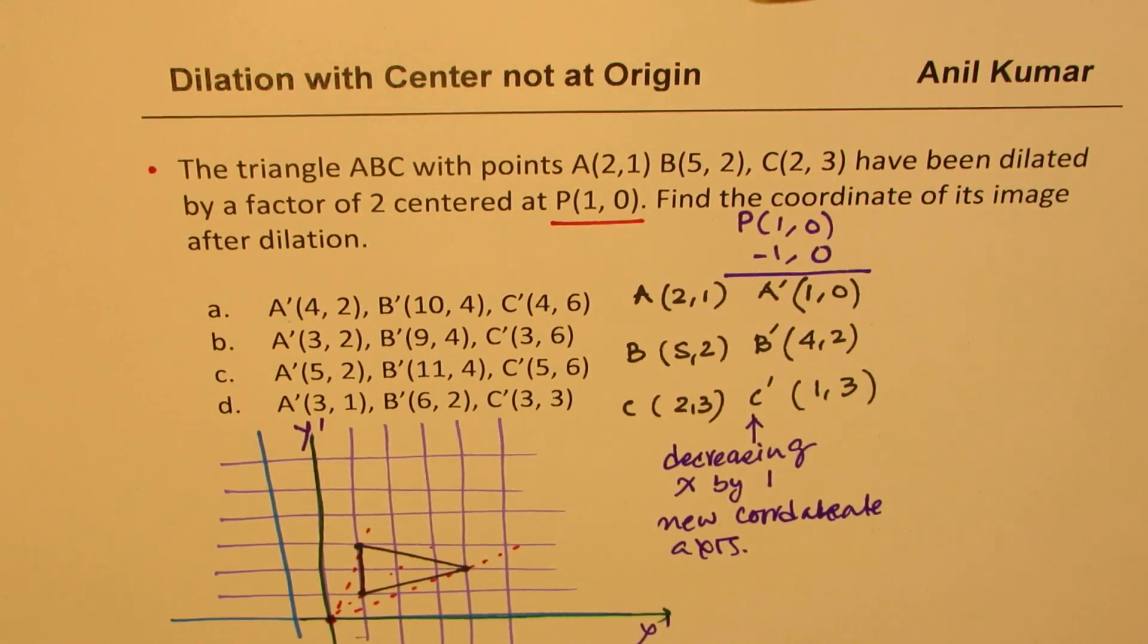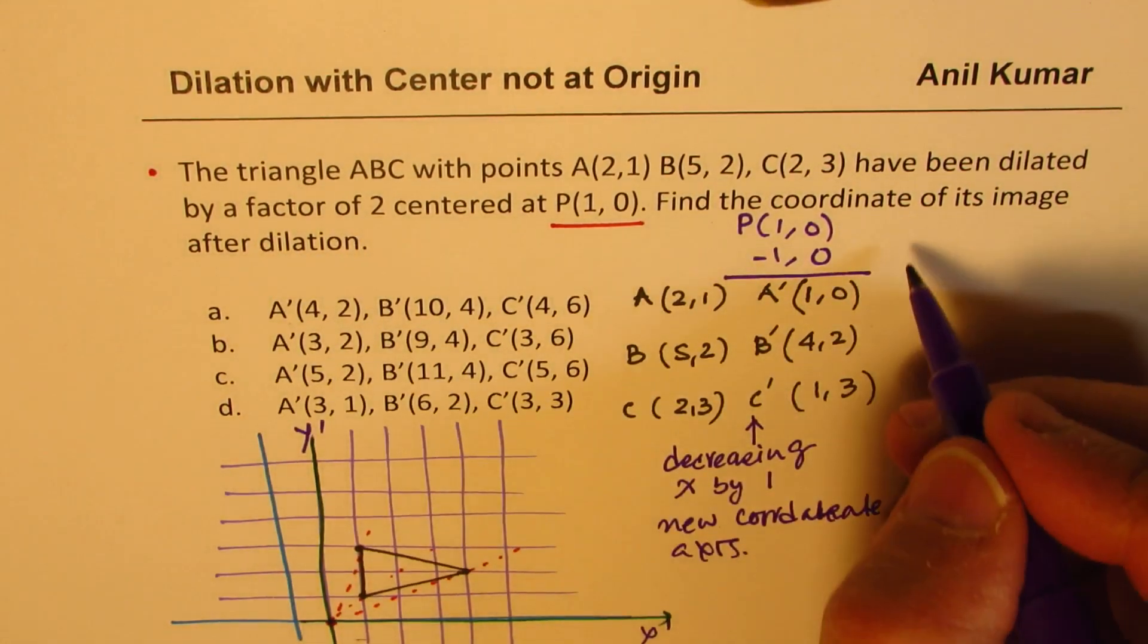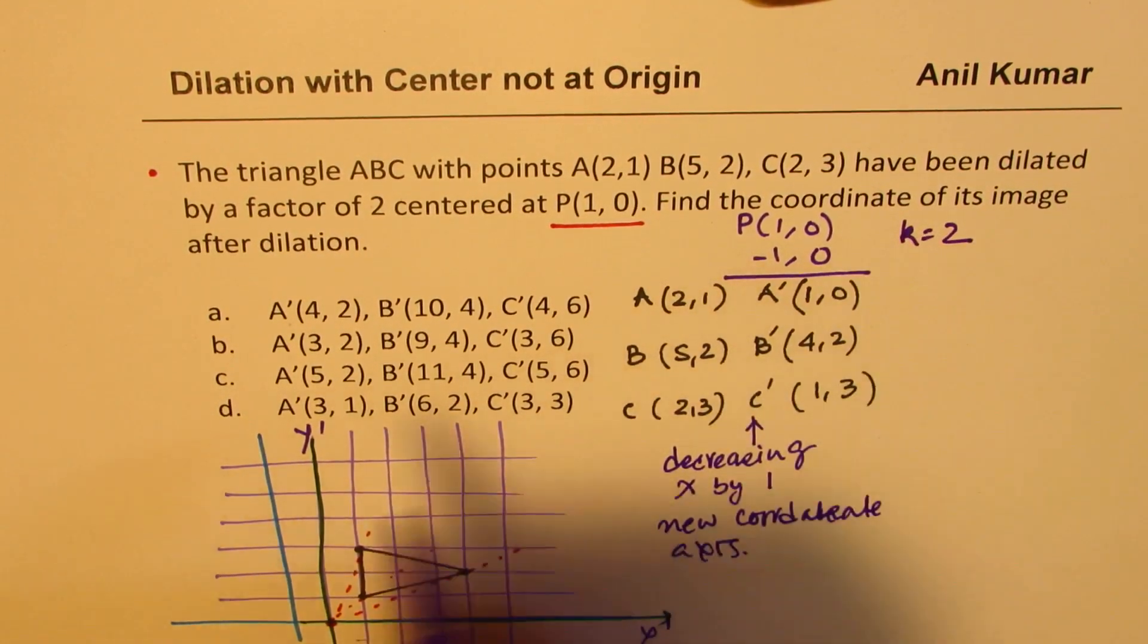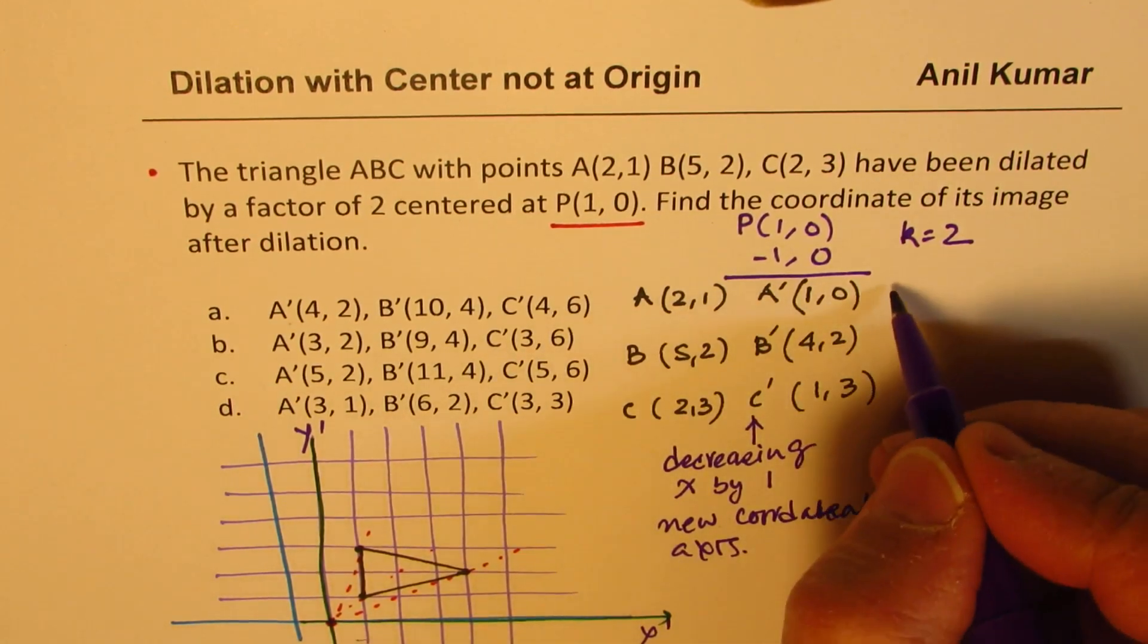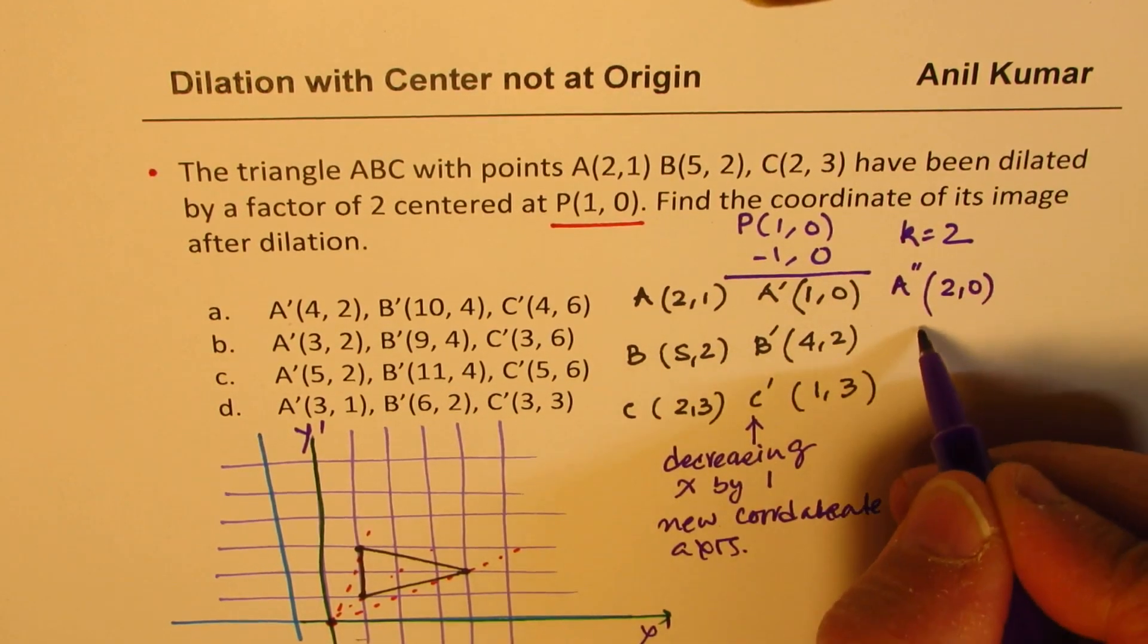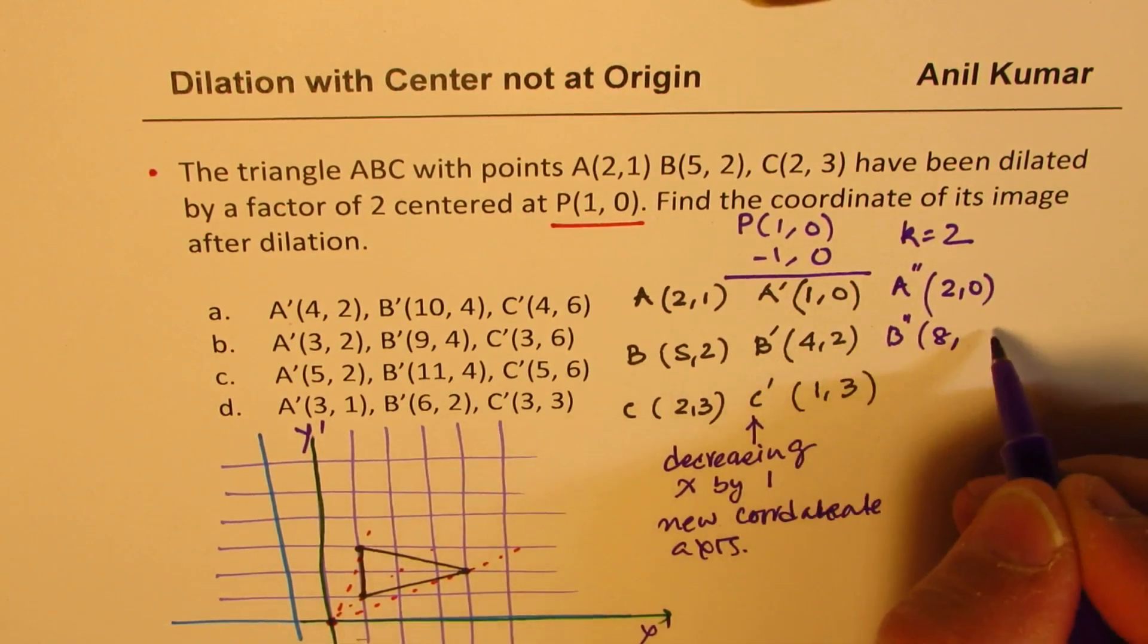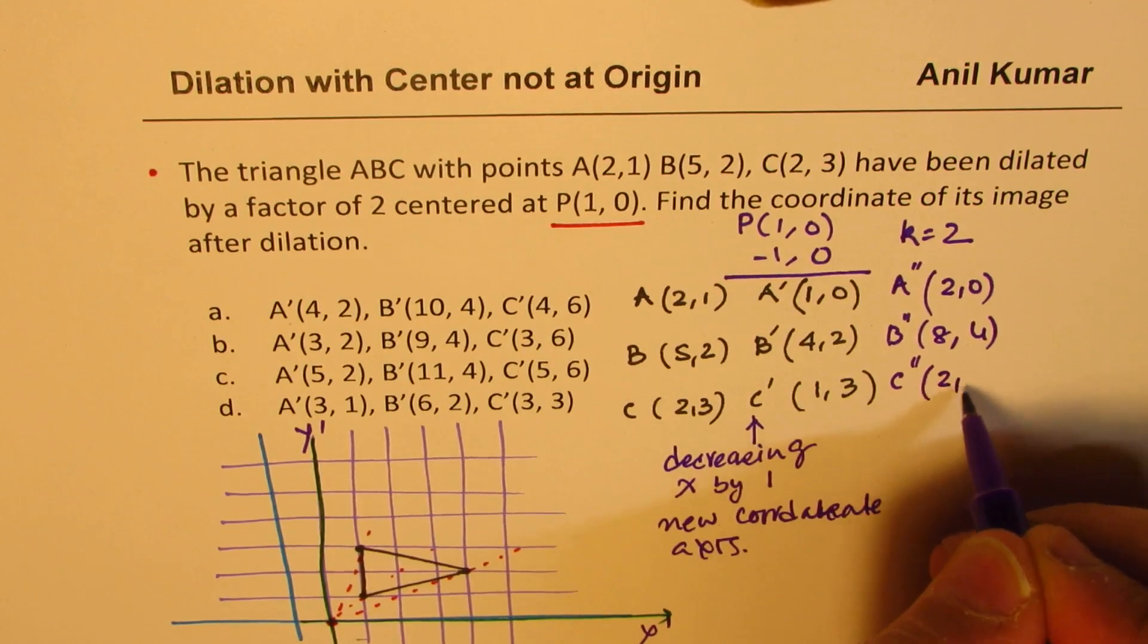Now for these coordinates, we have a factor k of 2. So now it is dilated by a factor of 2. So each point will get multiplied. So we'll call this as A double dash multiplying both by 2. So we get (2,0) here. And for B, we get (8,4). And for C, we get (2,6).